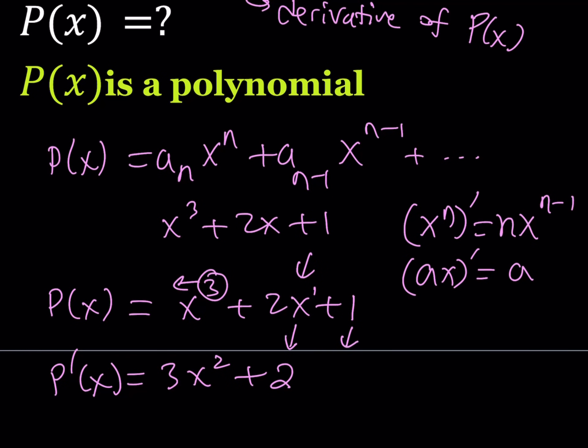the derivative of 1, 1 is a constant, it is going to be 0. We don't need to write it because constants don't change. Therefore, the rate of change is always 0. Okay, so that's how we found the derivative of this polynomial.